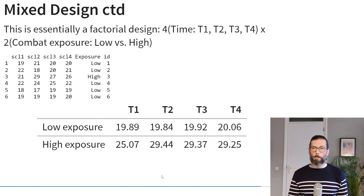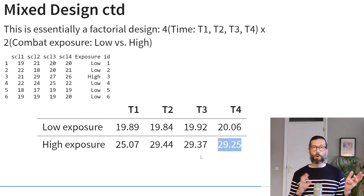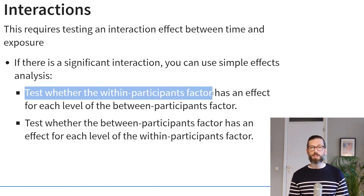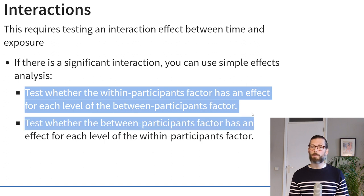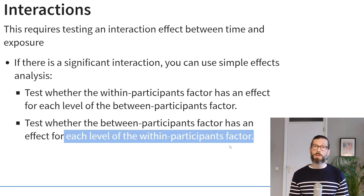This is essentially a factorial design with one factor at four levels (time) and one factor at two levels (combat exposure: low versus high), giving eight cell means in a four-by-two design. It's possible that the effect of time differs between high and low combat exposure groups, so we have to account for potential interactions between the two factors. If we find a significant interaction, we can use simple effects analysis to test whether the within-participants factor time has an effect for each level of the between-participants factor, or whether the between-participants factor has an effect at each time point.